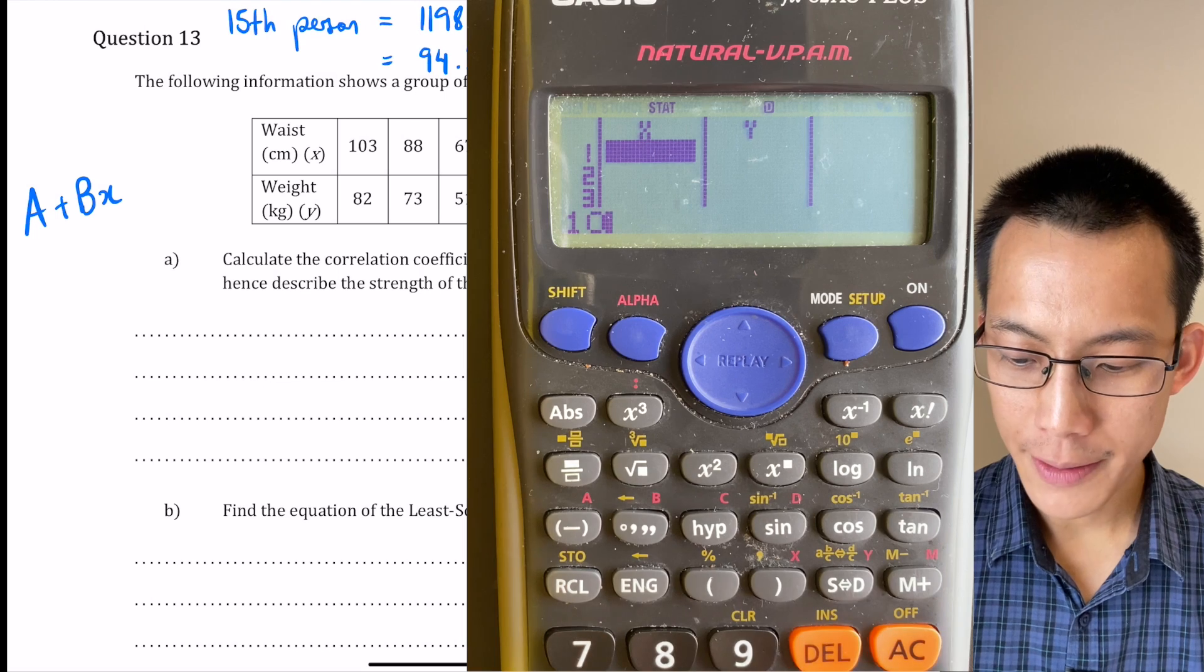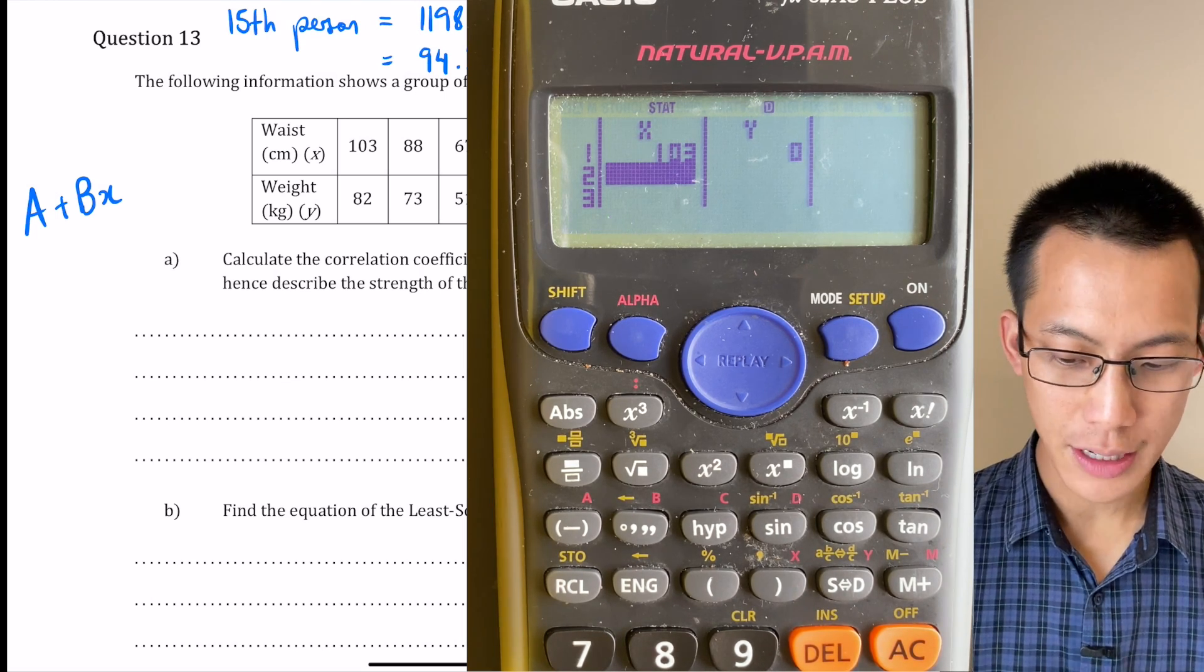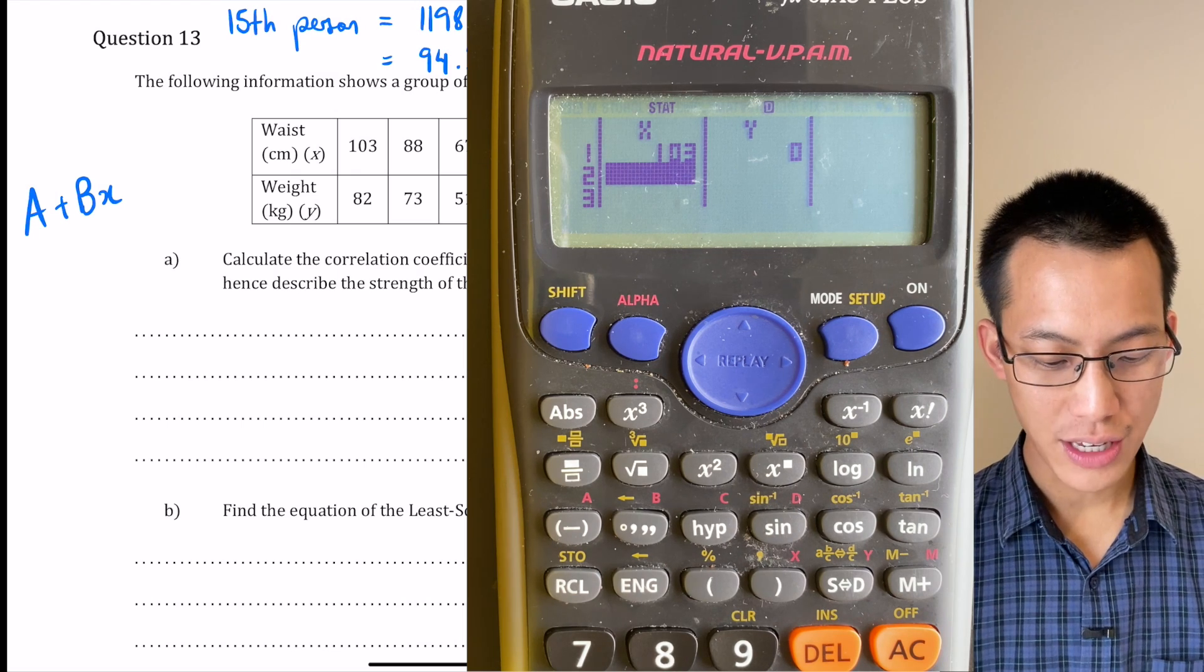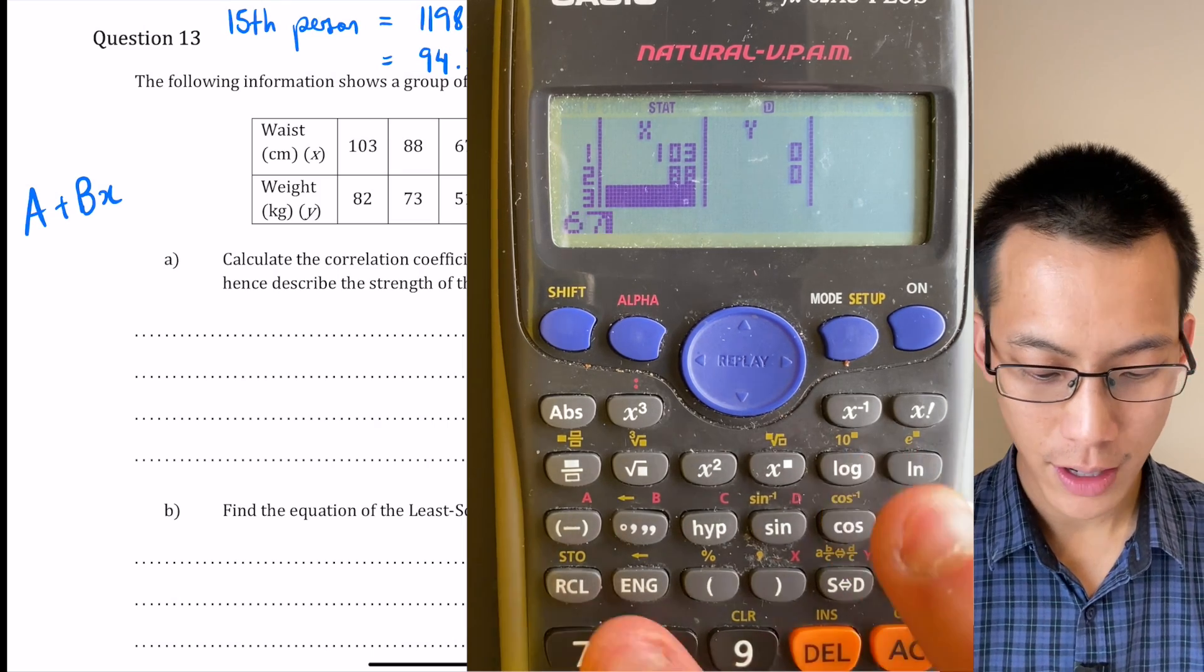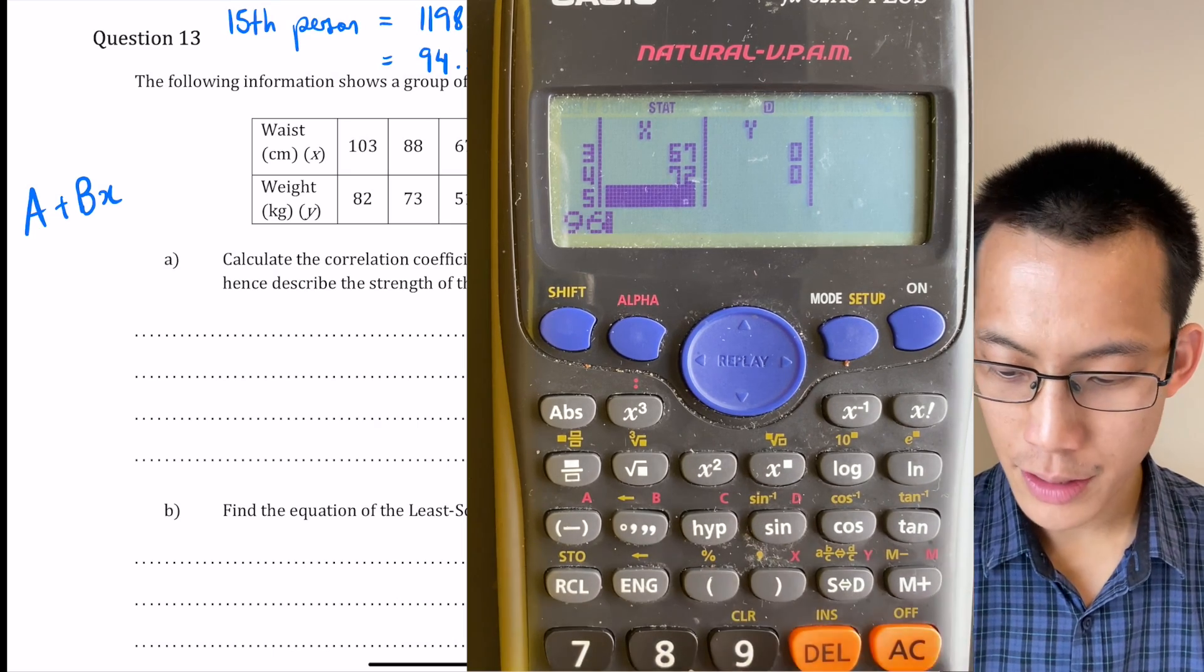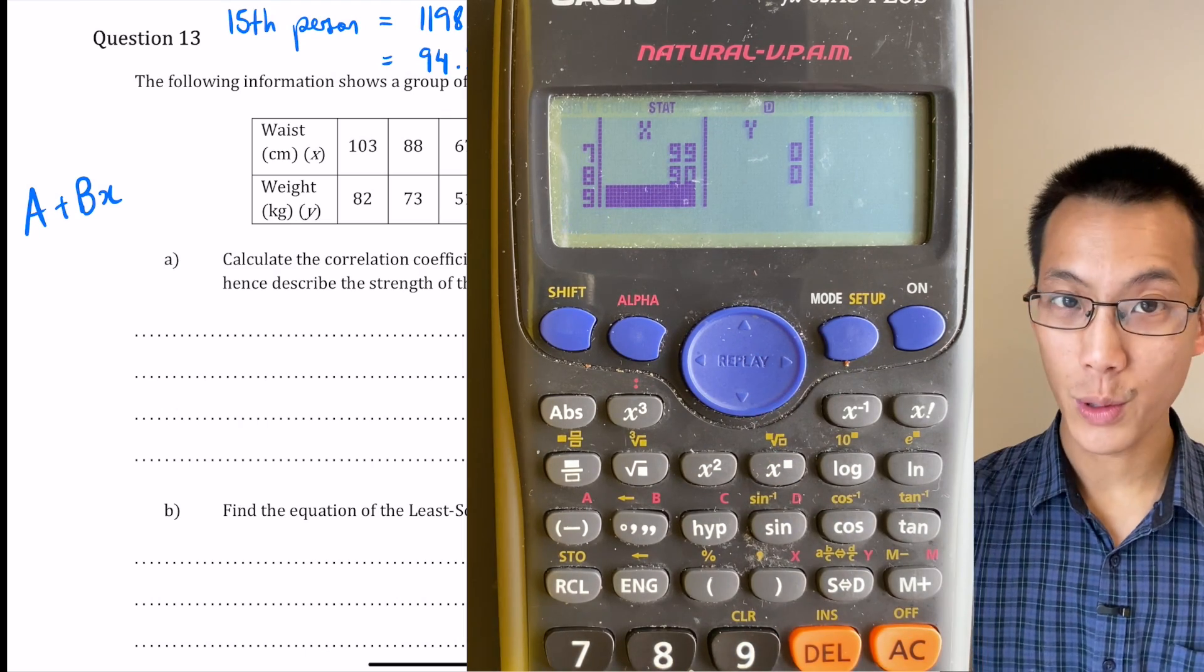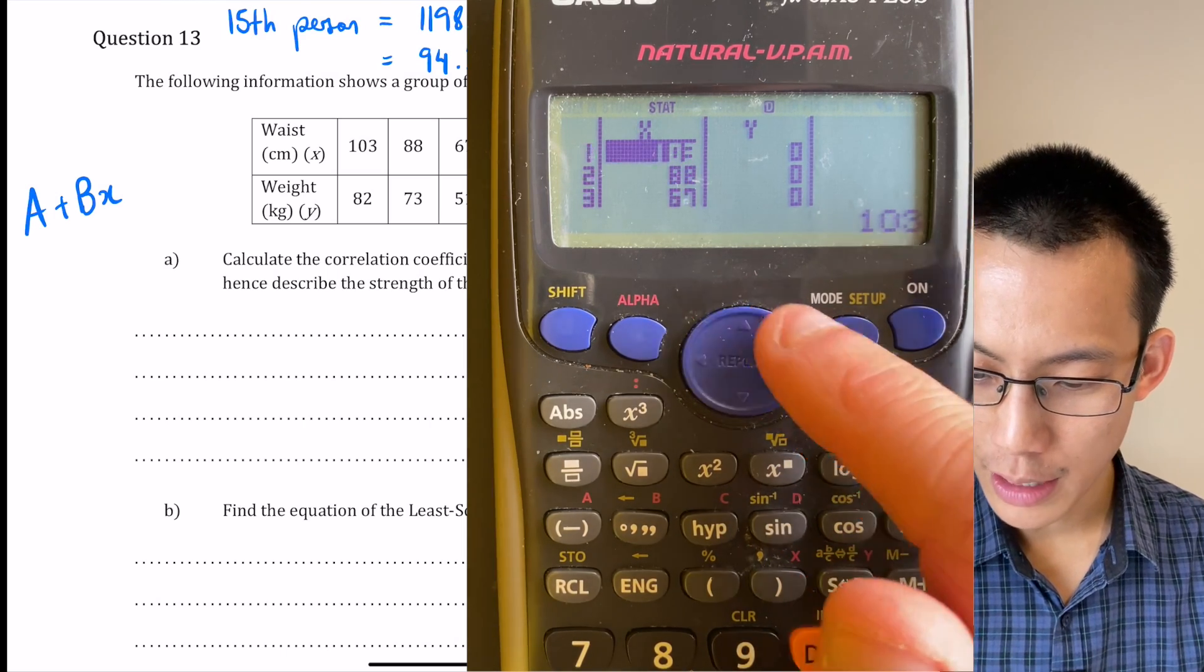Now if I press 103 which is the first waist piece of data and press equals you notice it goes down to the next value for X. So it's not going to be 82 which is a weight score it's going to be 88 which is the waist score. So I'm going to do all of those waist pieces of data 88, 67, I'm going to do all these in a row 72, 96, 81, 99, and 90. Okay so there's all of the waist measurements and I'll just again as I usually do go back and check that all my numbers are in the clear.